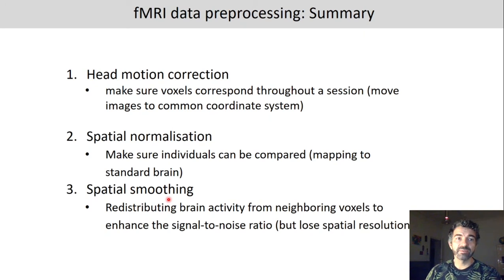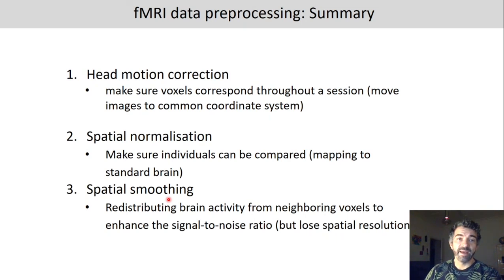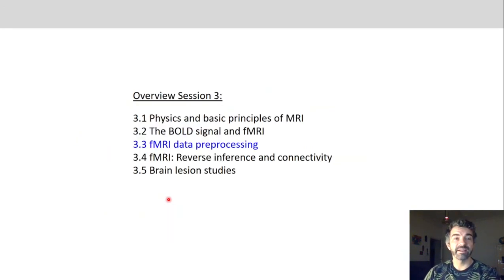To summarize: head motion correction ensures that each voxel corresponds to the same exact spot in the brain throughout a session, by moving images to a common coordinate system. Spatial normalization ensures that individuals can be compared by mapping them to a standard brain. Spatial smoothing redistributes brain activity from neighboring voxels in a filtering way to enhance the signal-to-noise ratio. Next, we will look at reverse inference and also at connectivity.